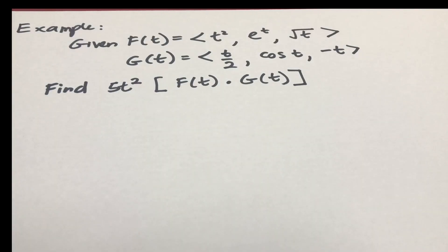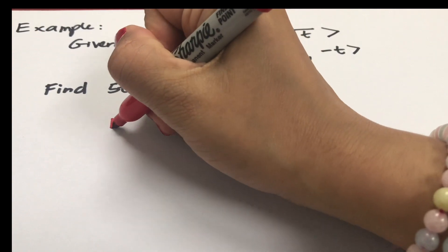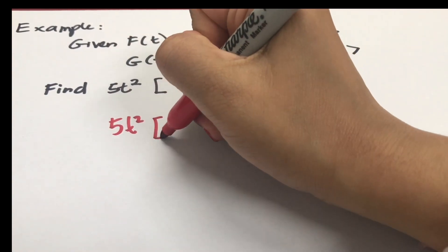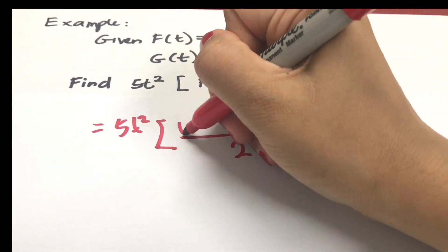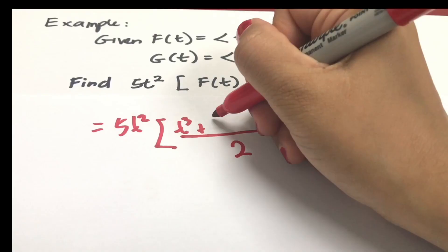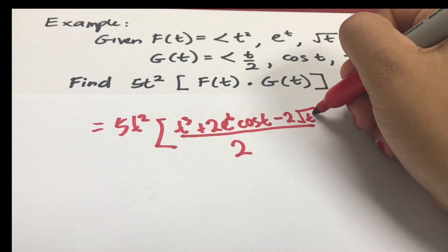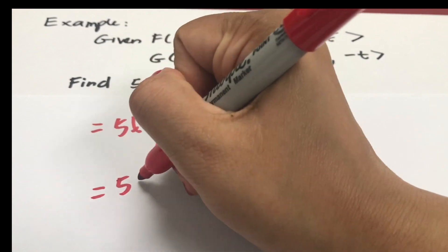This example asks us to find 5t² multiplied by the dot product of f of t and g of t. Based on our previous example, we apply the scalar multiplication property to the dot product of f of t and g of t.